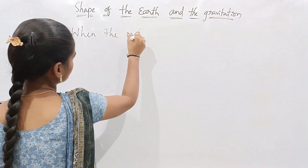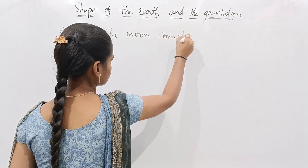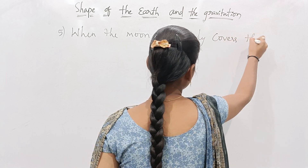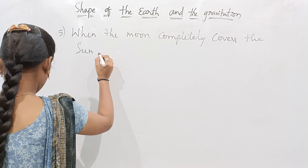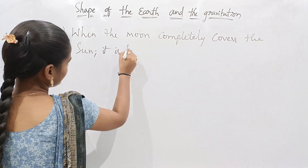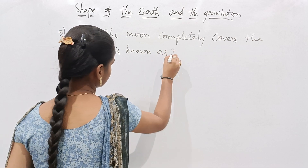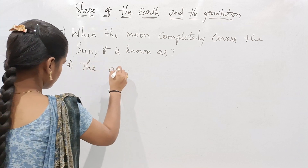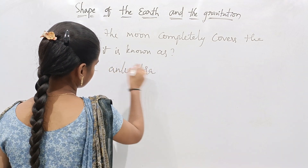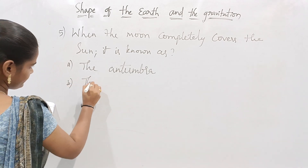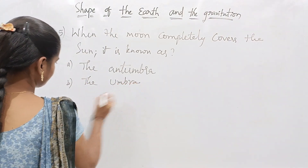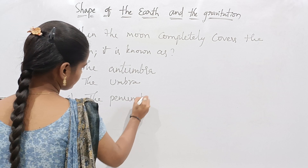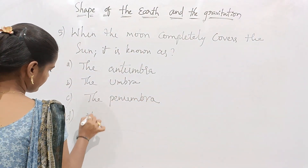The fifth question is: when the moon completely covers the sun, it is known as — Option A: the antumbra; Option B: the umbra; Option C: the penumbra; Option D: none.